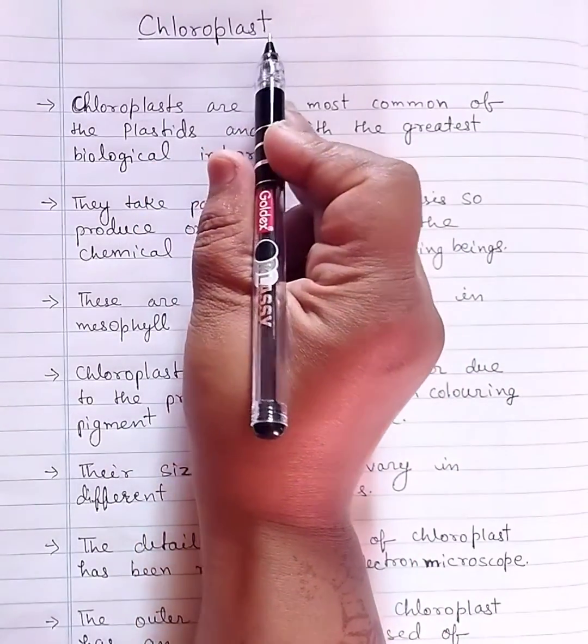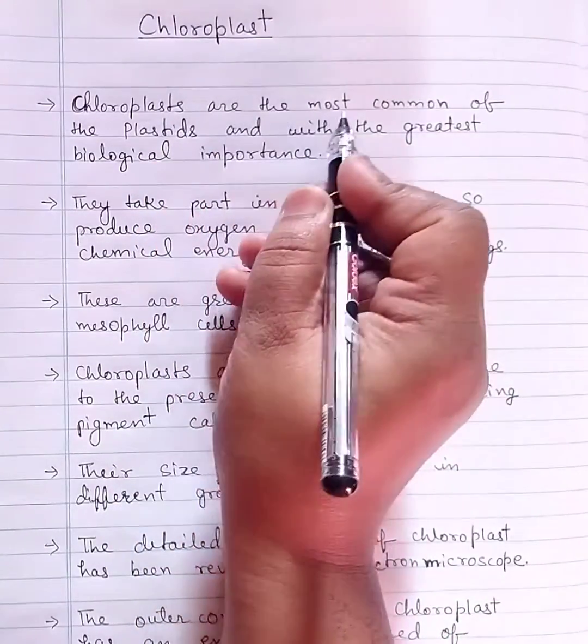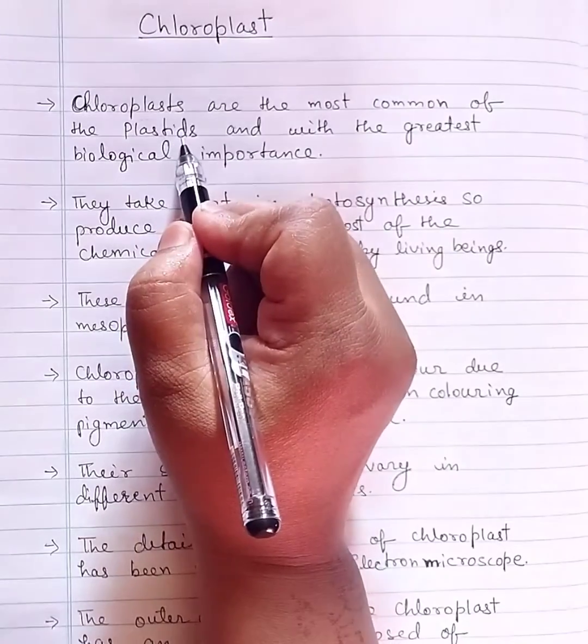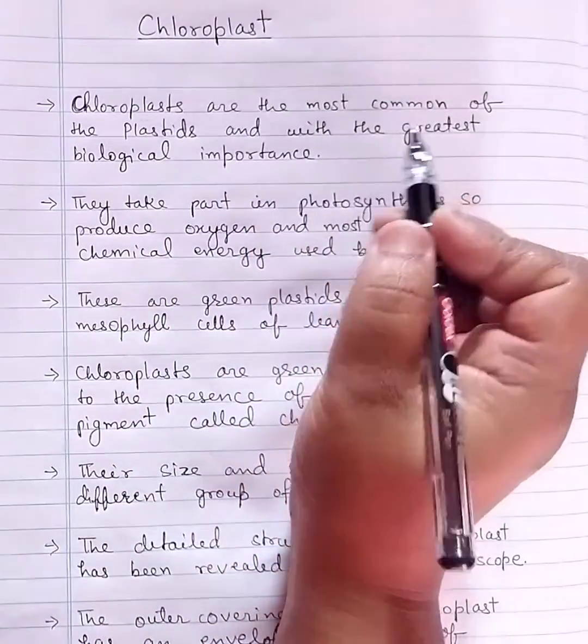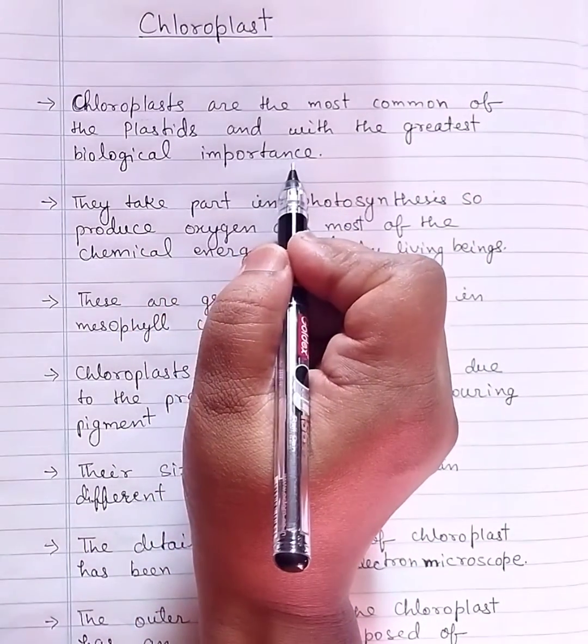Short notes on chloroplasts. Chloroplasts are the most common of the plastids with the greatest biological importance.